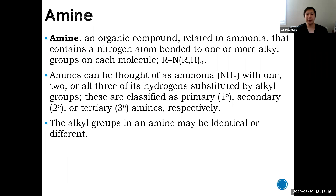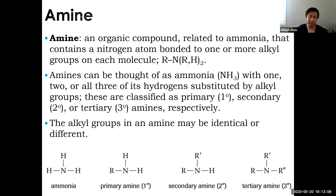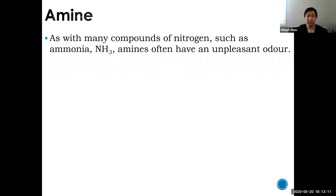An amine is an organic compound related to ammonia NH3, such that the hydrogens are substituted for a carbon chain. You can have one, two, or three carbon chains on a nitrogen and you will be an amine. That determines whether you are a primary, secondary, or tertiary amine. Ammonia is just NH3 - nitrogen with three hydrogens. A primary amine has one hydrogen substituted for a carbon chain, secondary has two alkyl groups, and tertiary loses all hydrogens with nitrogen bonded to three carbon chains.